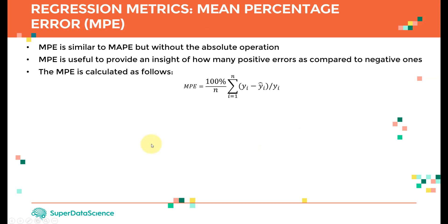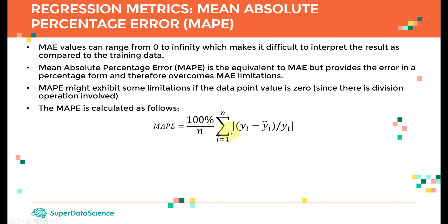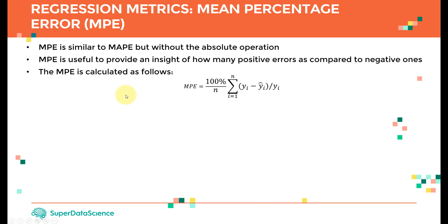The next metric is Mean Percentage Error, or MPE. It's the same as MAPE but without the absolute value operation. This means positive and negative errors can cancel each other out. MPE is useful for understanding how many positive errors there are compared to negative ones — giving insight into the direction of the bias.